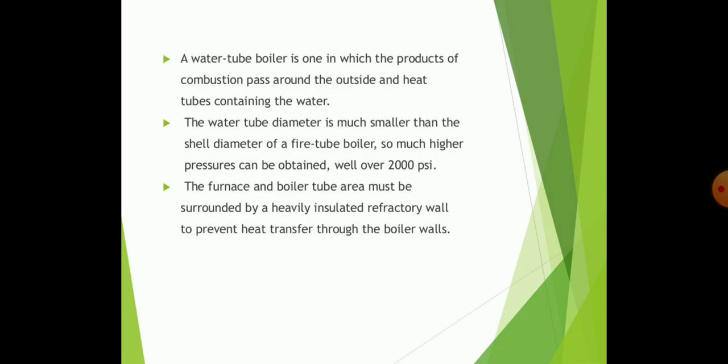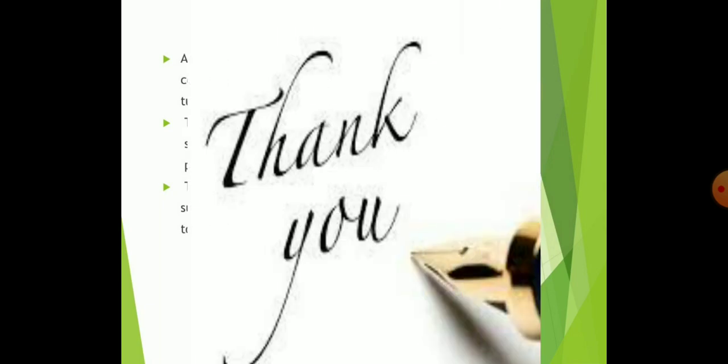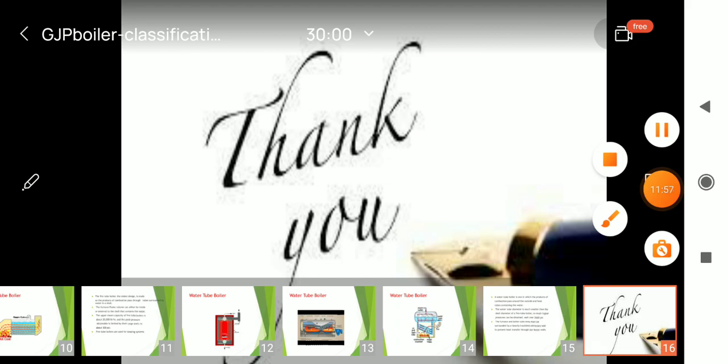The water tube diameter is much smaller as compared to the shell diameter and fire tube boiler so much higher pressure can be obtained all over 2000 pounds. The furnace and boiler tubes are must be surrounded by heavy insulated factory walls which prevent the heat transfer through the boiler walls. This is all about the steam generators and heating zone and essential requirements for the particular boiler. Thank you friends. Thank you very much.